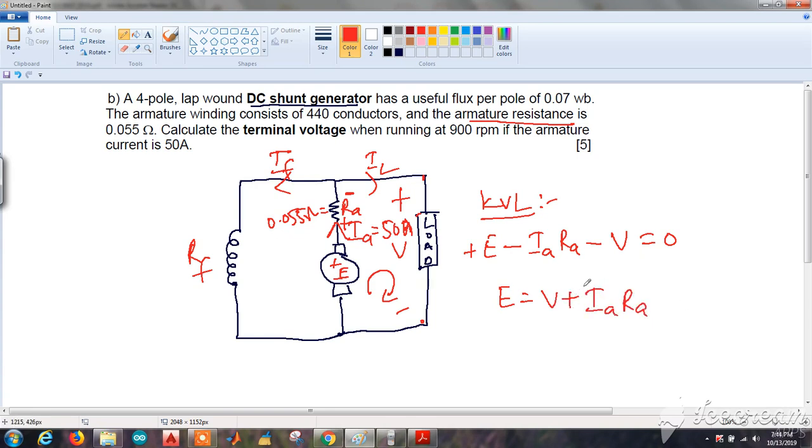We know this Ra, we know Ia, we have to find terminal voltage V. We don't know E, the generated EMF, but we can find it.